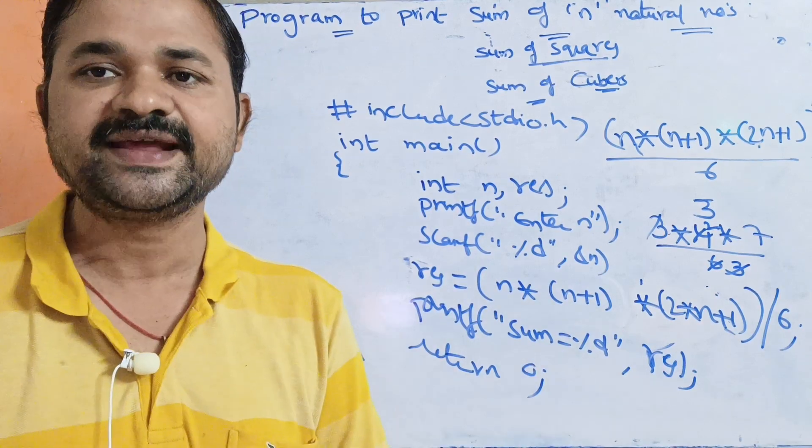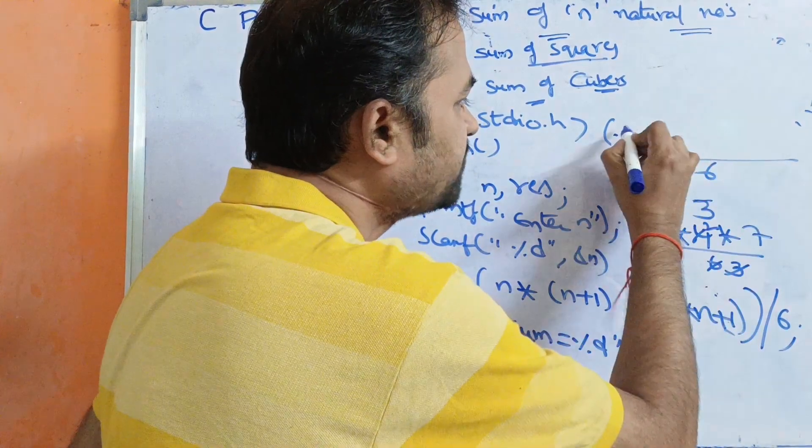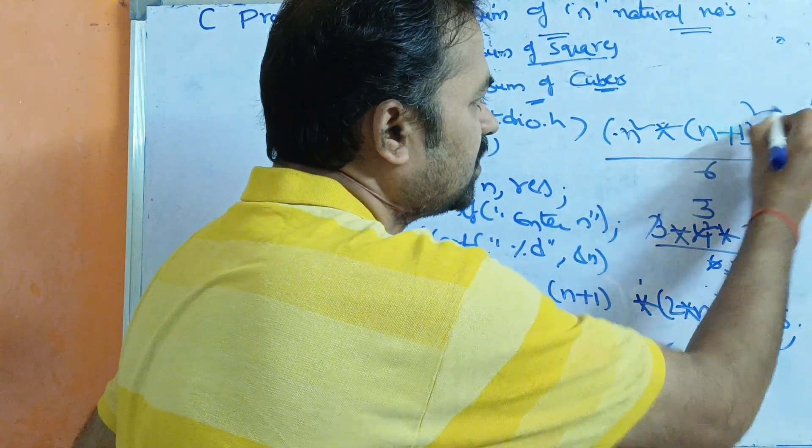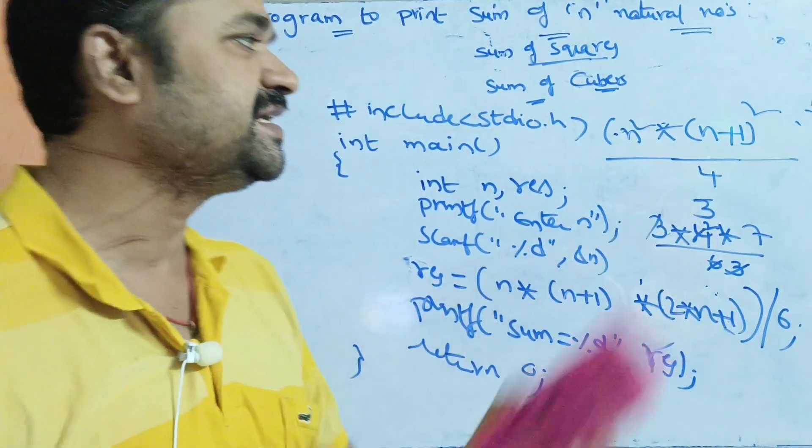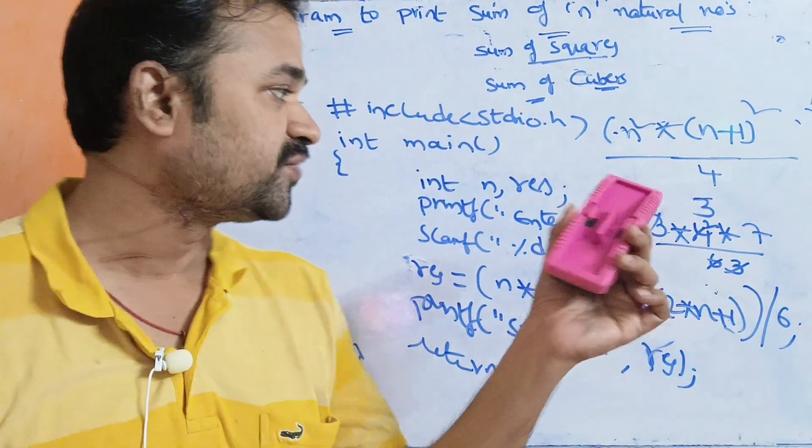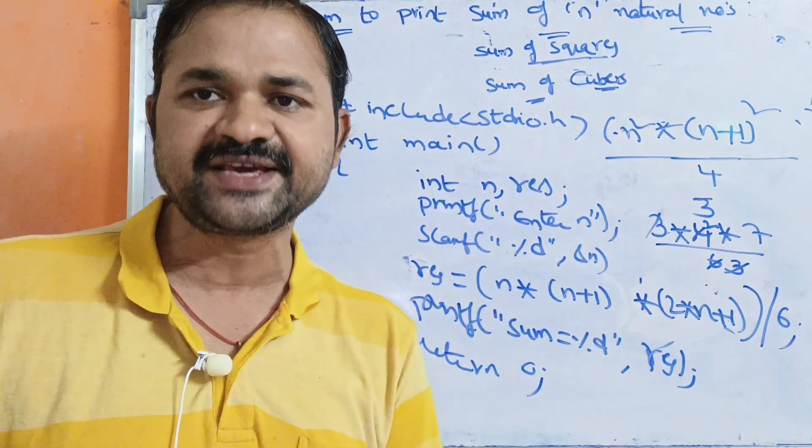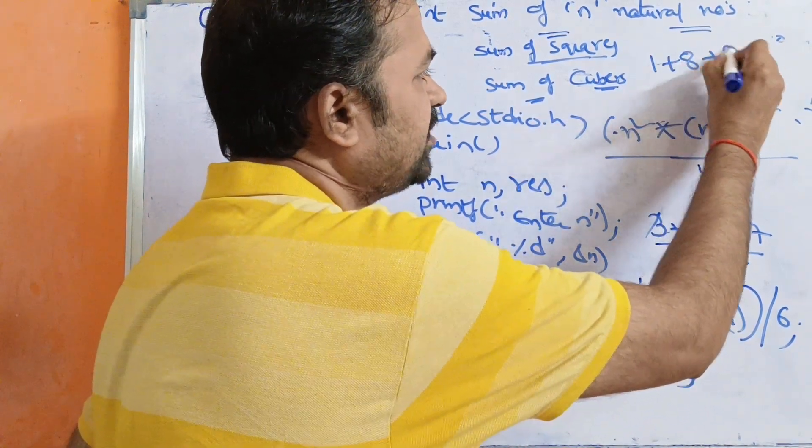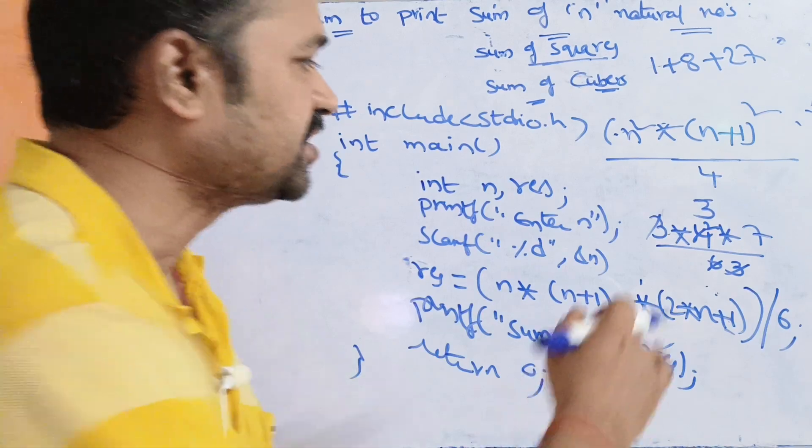Next is sum of cubes of n natural numbers. The formula is n square into (n+1) whole square by 4. Suppose 3 is given as input, sum of cubes of the first 3 numbers is 1 cube plus 2 cube plus 3 cube. 1 cube is 1, 2 cube is 8, 3 cube is 27. So that is equal to 36.